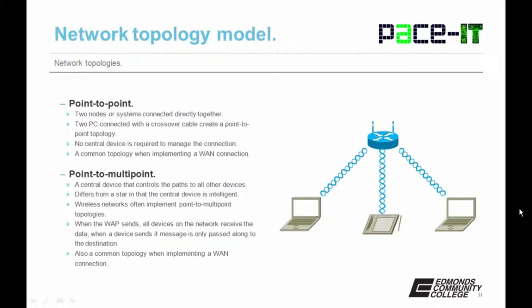We also need to discuss point-to-multipoint. In a point-to-multipoint topology, a central device controls the paths to all other devices. This differs from a star in that the central device is intelligent. Wireless networks often implement point-to-multipoint topologies — when the wireless access point sends, all devices on the network receive the data, but when a device sends, its message is only passed along to the destination. It's also a common topology when implementing a WAN across a packet-switch network.